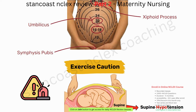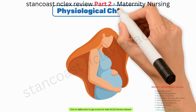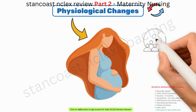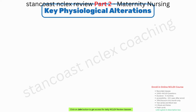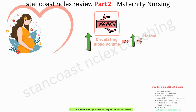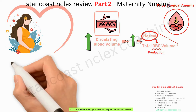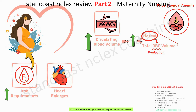Pregnancy instigates a profound array of physiological changes within a woman's body. In the cardiovascular system, circulating blood volume increases, encompassing elevation in both plasma and total red blood cell volume. This shift can result in physiological anemia as plasma increase surpasses red blood cell production, causing iron requirements to escalate. The heart enlarges and shifts slightly upward and to the left due to the expanding uterus. Additionally, sodium and water retention may occur as part of these cardiovascular adaptations.